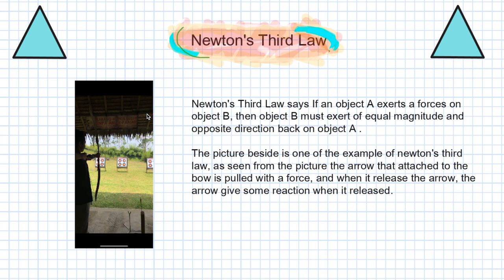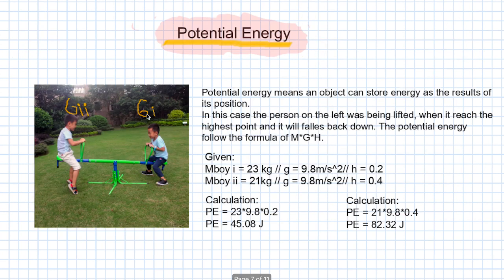Newton's third law states that if object A exerts a force on object B, then object B must exert a force of equal magnitude and opposite direction back on object A. The picture beside is an example of Newton's third law — the arrow attached to the bow is pulled with a force, and when it is released, the arrow gives a reaction force.